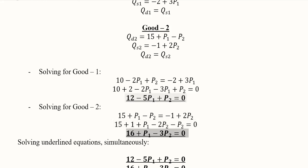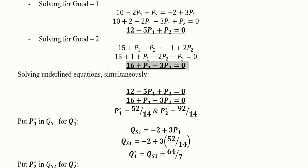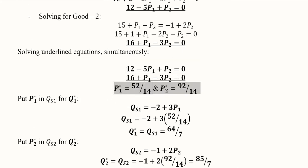For good one we have an equation in terms of p1 and p2, and for good two we again have an equation in terms of p1 and p2. These now become a pair of simultaneous equations, which we can solve easily. You can pause the video and use any method — substitution or elimination — to solve them.